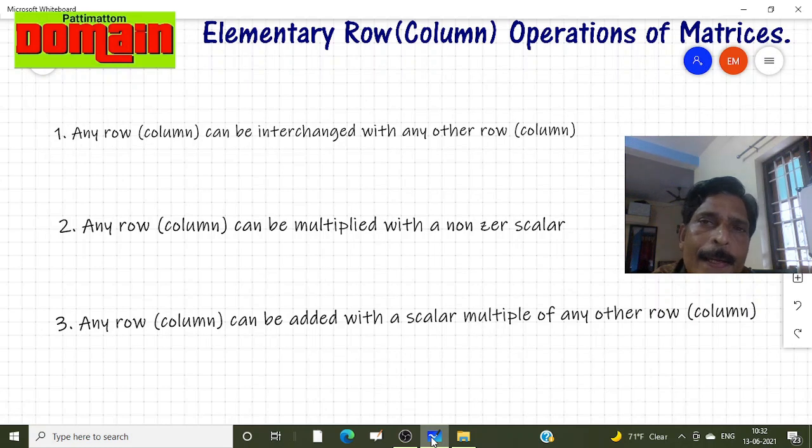In matrices there are three elementary row column transformations. They are usually used to find out the solutions of system of linear equations and also used for finding the inverse of matrices.